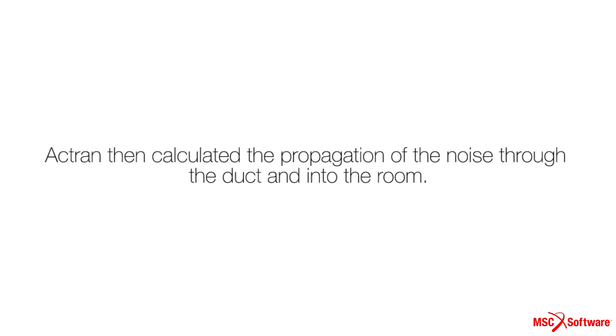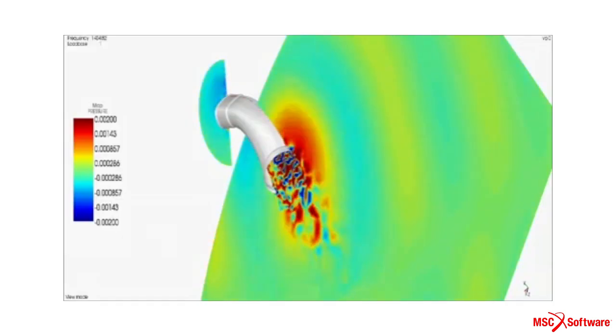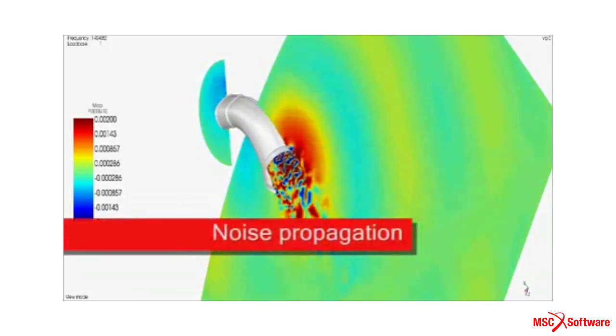ACTRAN then calculated the propagation of the noise through the duct and into the room in the test lab. Results options include sound pressure levels at virtual microphone locations chosen by the engineer.